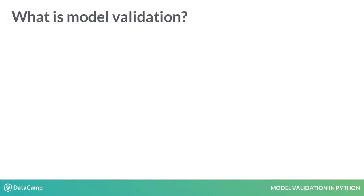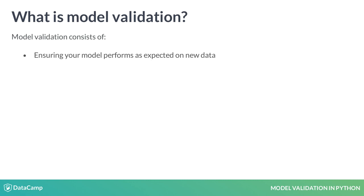So what is model validation? Model validation consists of various steps and processes that ensure your model performs as expected on new data. The most common way to do this is to test your model's accuracy on data it has never seen before, called a holdout set. If your model's accuracy is similar for the data it was trained on and the holdout data, you can claim that your model is validated.